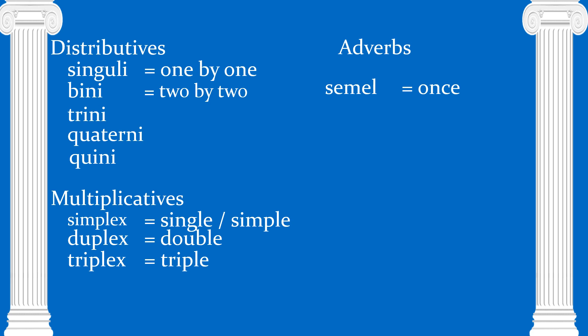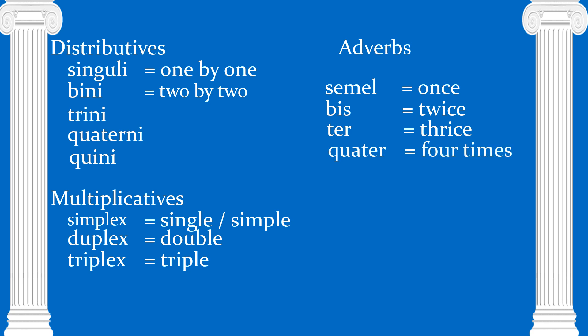Bis is twice. Ter, as in tertia or tertiary, is thrice. Quater is four times — there is no word for it in English. And quinquens is five times — again, there's no word for this in English. So these are different forms of numbers, but they're not as common as the ordinals and the cardinals, which were mentioned in the previous video.